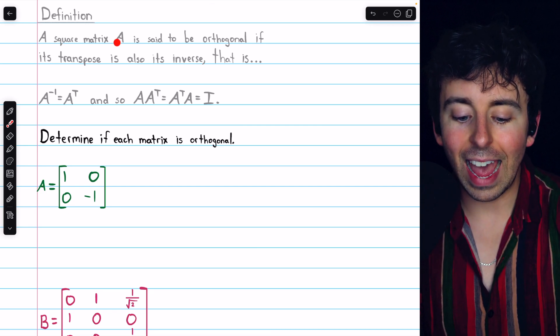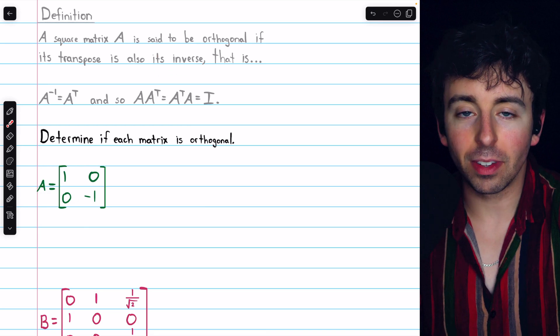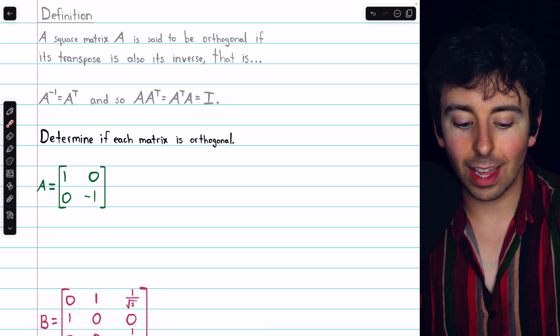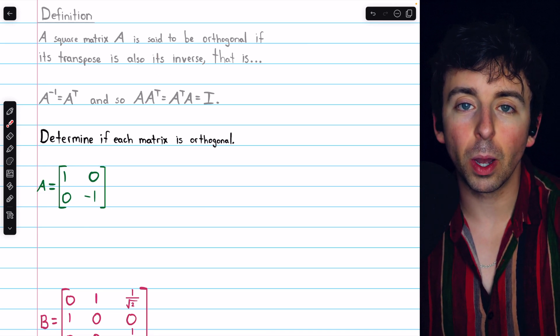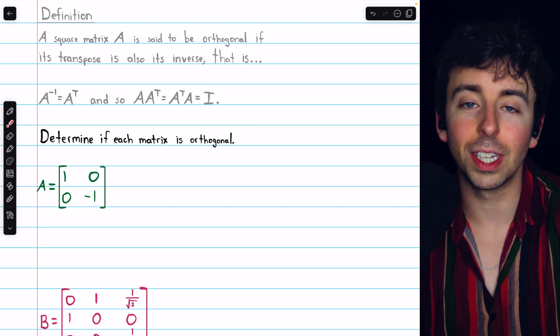We know a square matrix A is orthogonal if its transpose is the same as its inverse, which means that A times A transpose should be the same as A times A inverse, and so it should equal the identity.